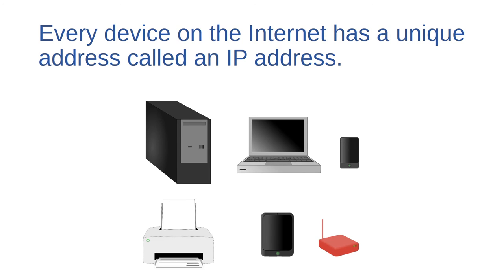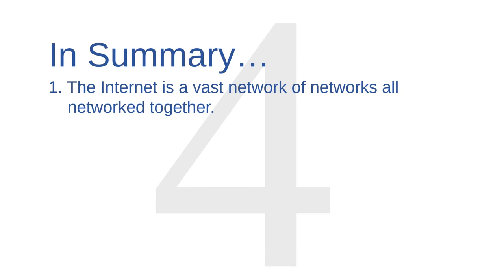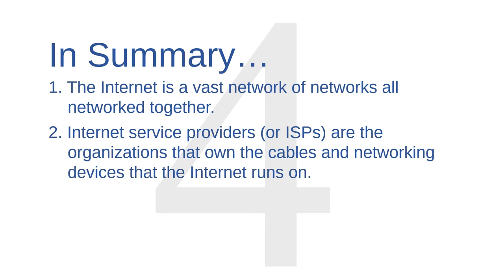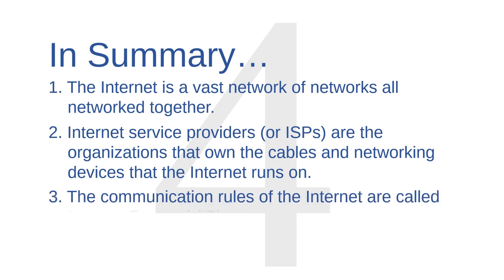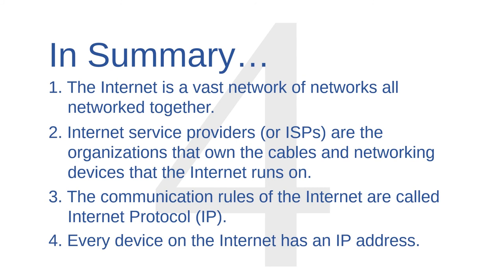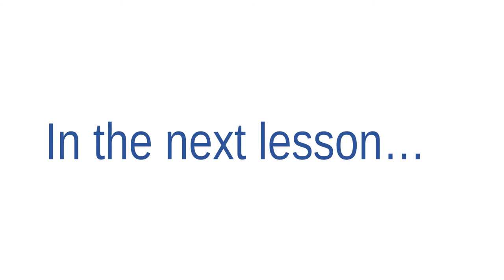So, in summary, the internet is a vast network of other networks all networked together. Internet service providers, or ISPs, are the organizations that own the cables and networking devices that the internet runs on. Computers need strict sets of communication rules, called protocols, in order to communicate with each other. And the communications protocol of the internet is called internet protocol, or IP. Finally, every device on the internet gets its own IP address. That's all for now. In the next lesson, we'll discuss how the internet is structured and how IP addresses get assigned to all those devices on the internet.